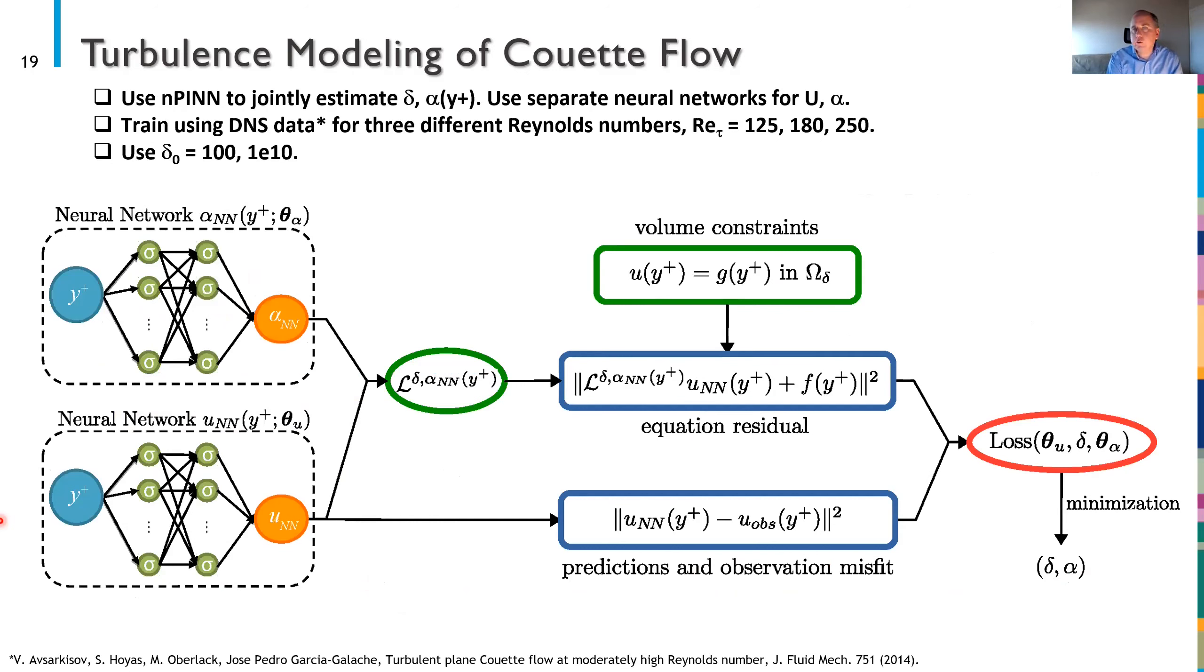We'll use nPINNs to try to jointly estimate δ as well as α as a function of the wall distance. And in fact we're going to use separate neural networks to do this. I'm going to use a neural network here to train for α as a function of y and I'll use another neural network to produce u as a function of y and use both an equation residual as well as an observation misfit here to produce my loss function given particular boundary constraints. And I'll start out with two different initial guesses for δ.